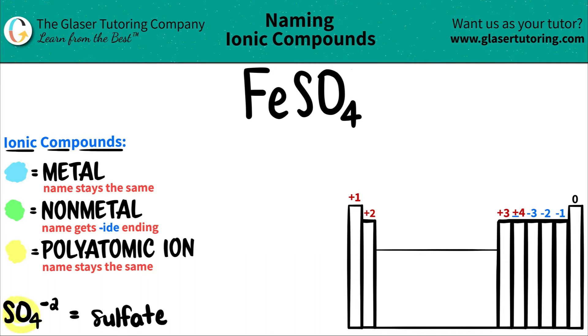SO4 always has a negative two charge and is always called sulfate. Here's SO4 right here - that's the polyatomic ion.